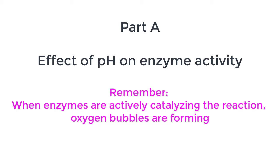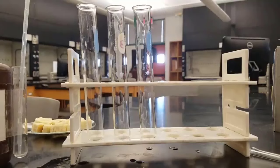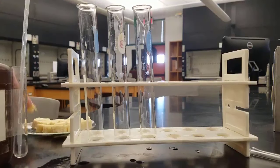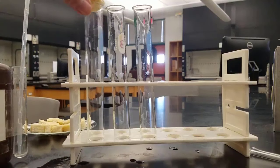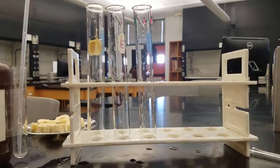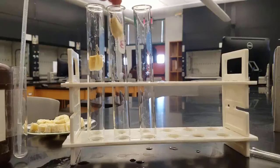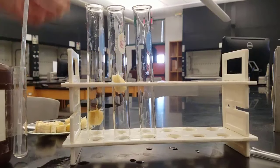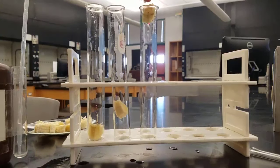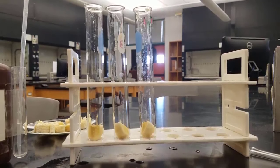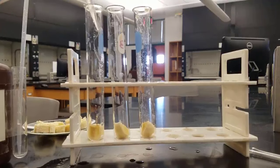In Part A we're going to look at the effect of pH on enzyme activity. Just a reminder that bubbles will show us that our enzyme is active. To start with, we've cut up the banana into roughly equal sized chunks. We want to control as many variables as possible, so we are using the same size banana and the same size test tubes for each of these.